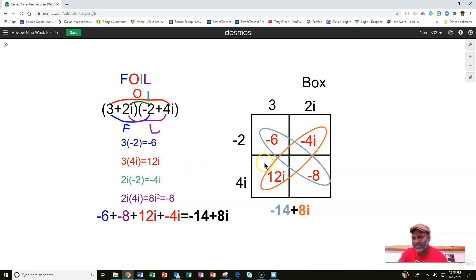And now you just fill in the squares with the product. 3 times negative 2 is negative 6. 2i times negative 2 is negative 4i. 3 times 4i is 12i. Same answer we got over here. And 2i times 4i is negative 8 for the same reason that we did over here.